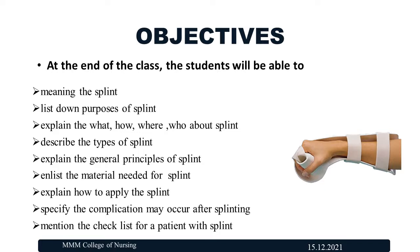The objectives of today's class: the students will be able to define the meaning of a splint, list down the purposes of the splint, explain the what, how, where, and who about splint, describe the types of splint, explain the general principles of splint, enlist the material needed for the splint, explain how to apply the splint, specify the complications that may occur after splinting, and mention the checklist for patients with the splint.